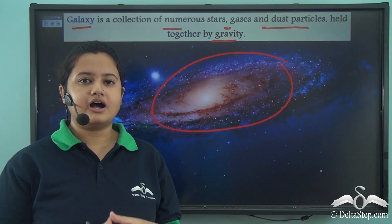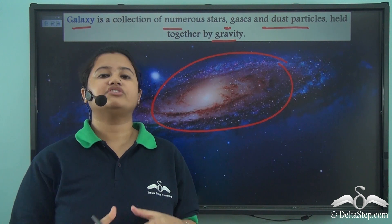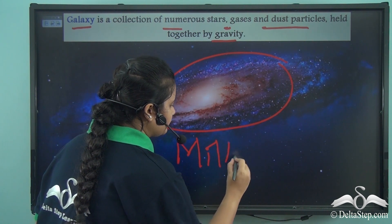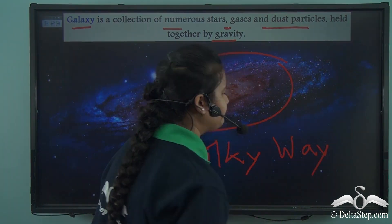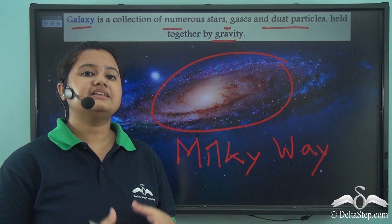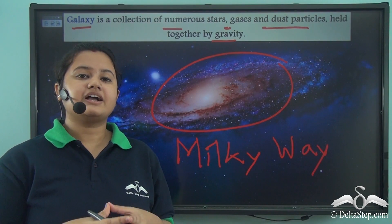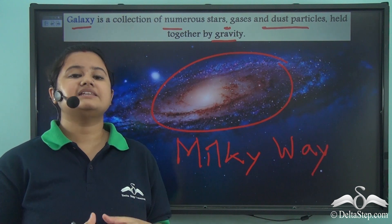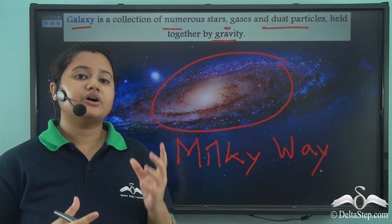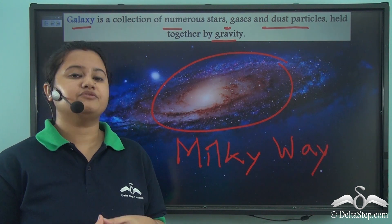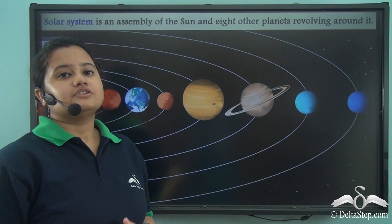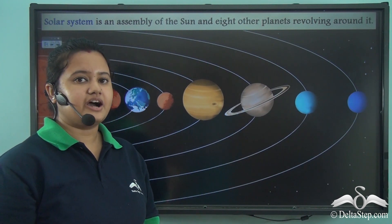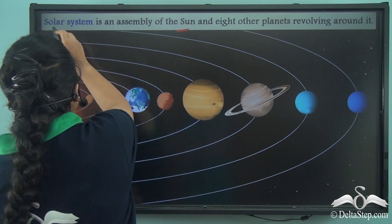We live in one of the arms of a galaxy, and the name of the galaxy where we live is known as the Milky Way. The other name for Milky Way is Akash Ganga Galaxy. Our Milky Way consists of millions and trillions of stars and several other celestial bodies. Celestial bodies like planets revolve around a particular star and form a subsystem within the galaxy. This subsystem, formed when several planets revolve around a particular star — the Sun — is known as the Solar System.